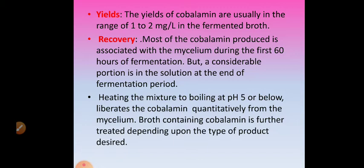The yield of cobalamin is usually in the range of 1 to 2 mg per litre in the fermented broth. Most of the cobalamin produced is associated with the mycelium during the first 60 hours of fermentation, but a considerable portion is in the solution at the end of the fermentation period. Heating the mixture to boiling at pH 5 or below liberates the cobalamin quantitatively from the mycelium.